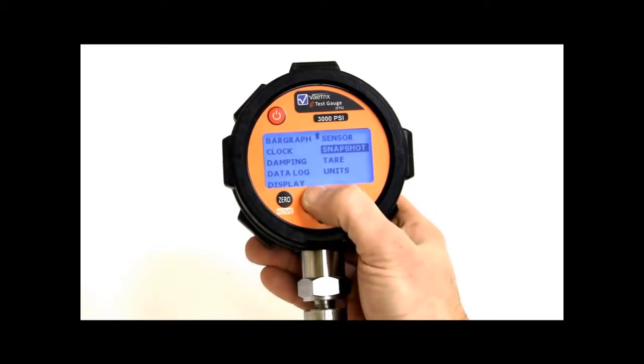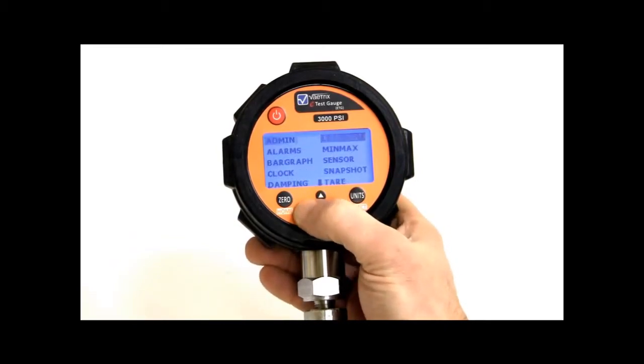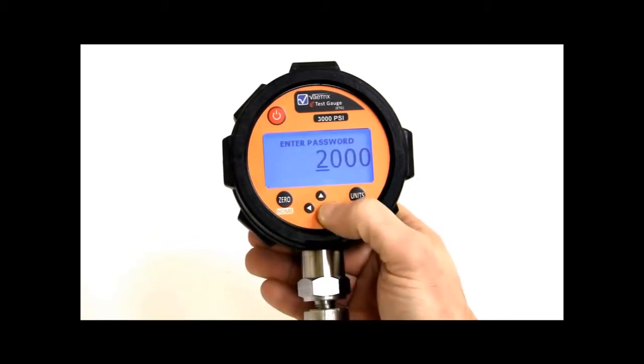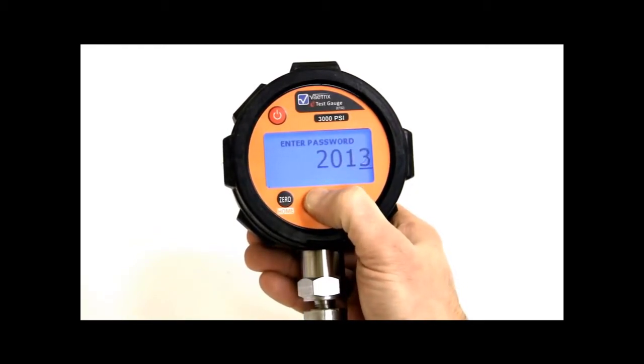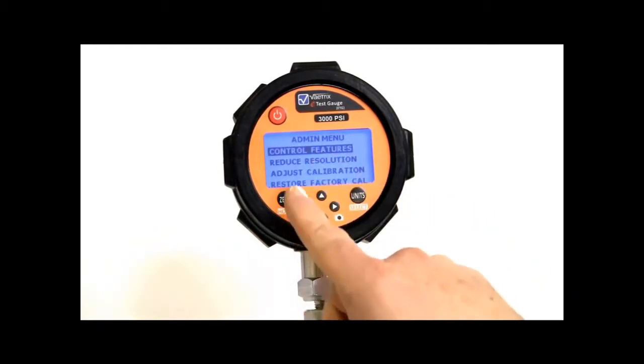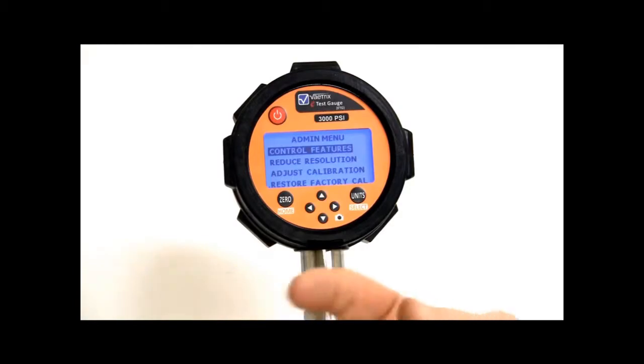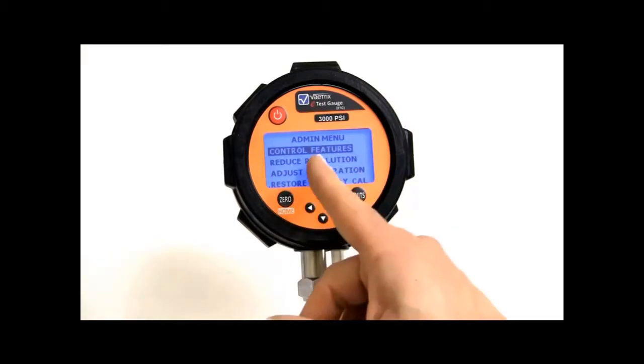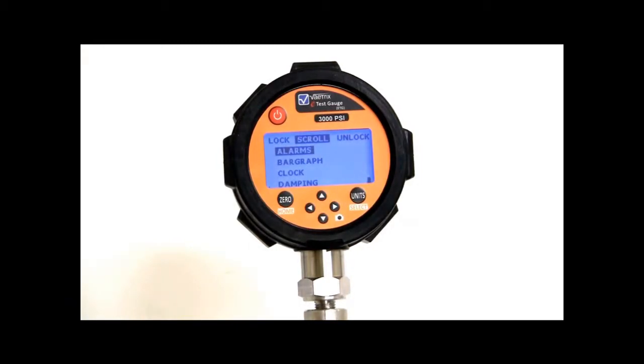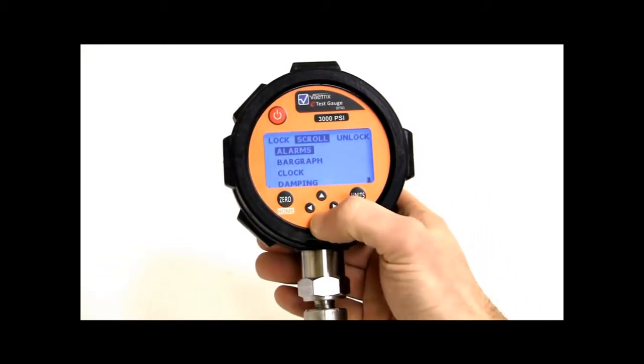Alright, so let's go back to home. Let's dive in to admin. So admin, we give you the capability to lock out certain menus or certain features. And I set the password to 2017. So we'll set that, hit select. So in admin you can restore the factory cal, you can perform a calibration, you can reduce the resolution on the display. Say you wanted to not see the full digits on the display, you can actually adjust that. Now under control features, which is the first one. So I can lock out, it's the same menu that you saw on units. I can lock out particular menus I didn't want people in.